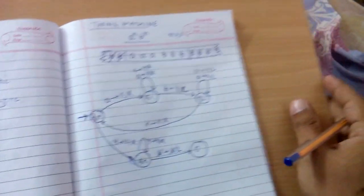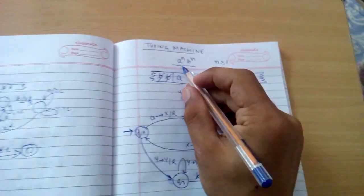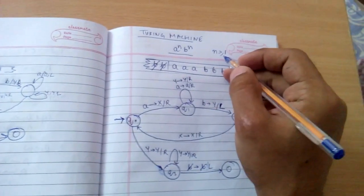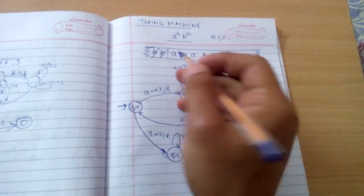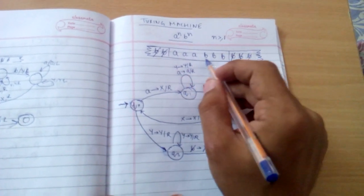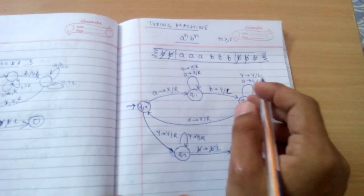Hello friends, today we are going to study a Turing machine example a^n b^n where n is greater than or equal to 1. This is the input tape. We have taken an example string aaa bbb, then the left and right are blank.